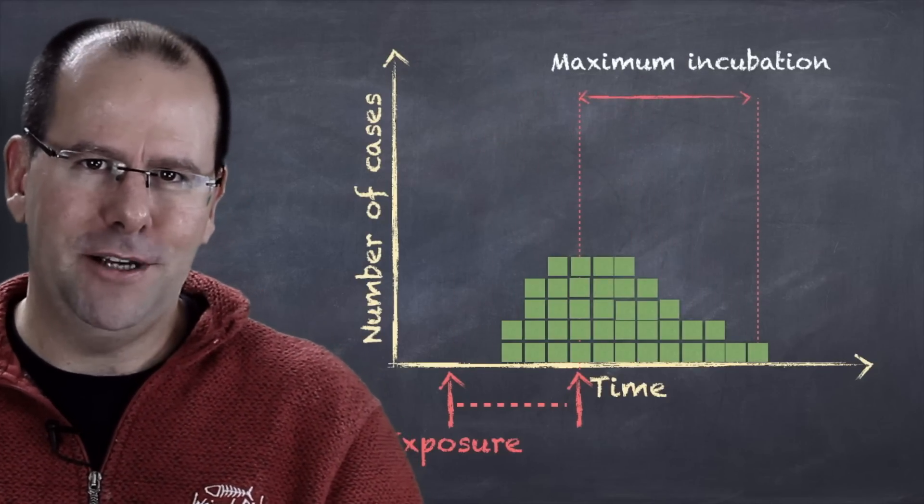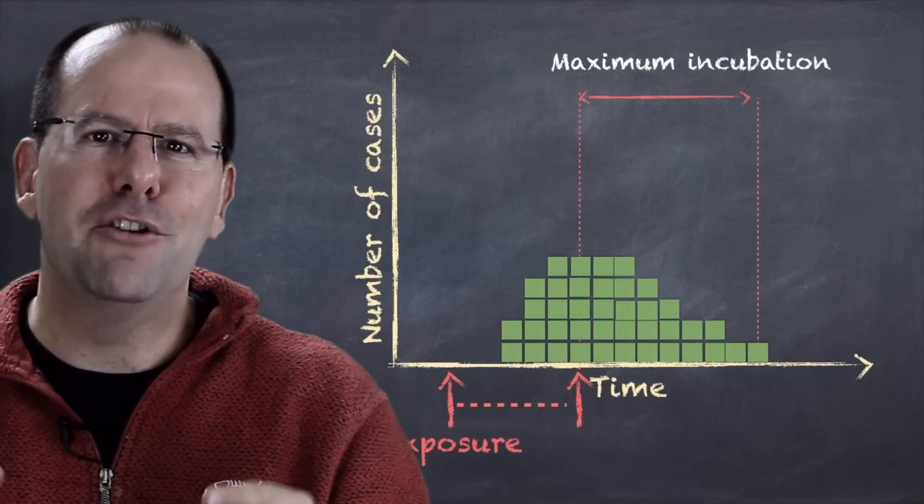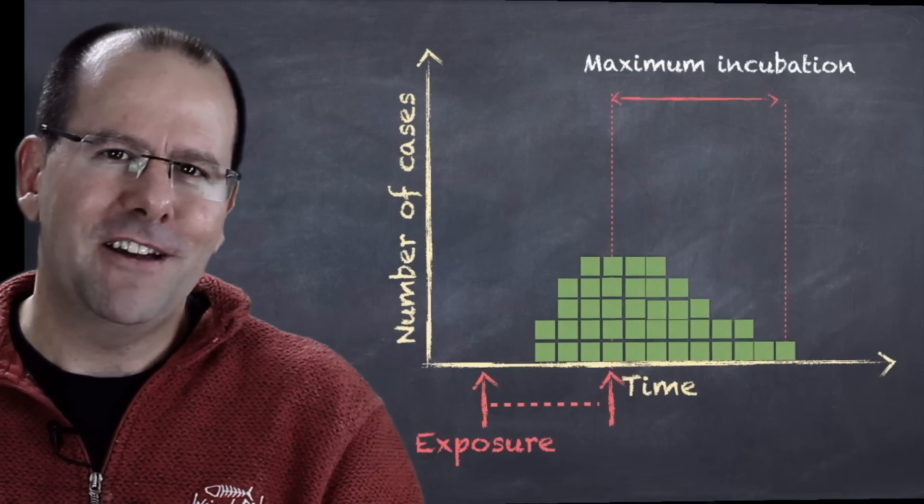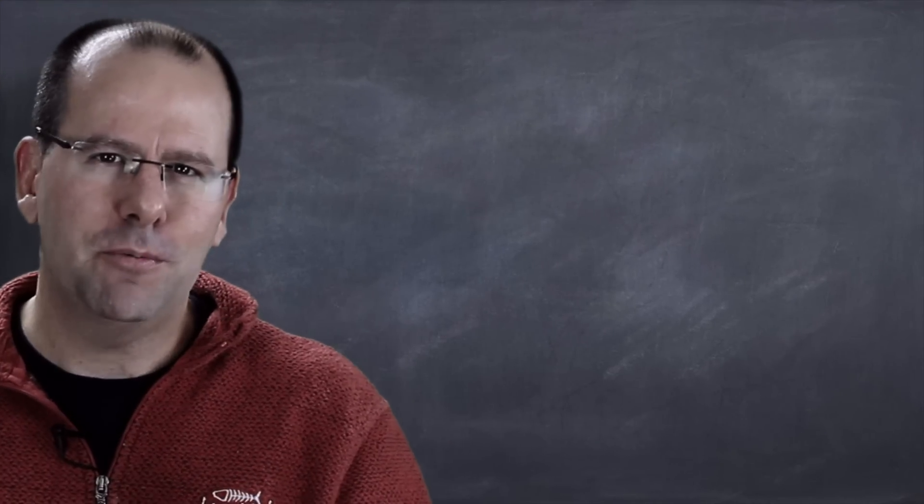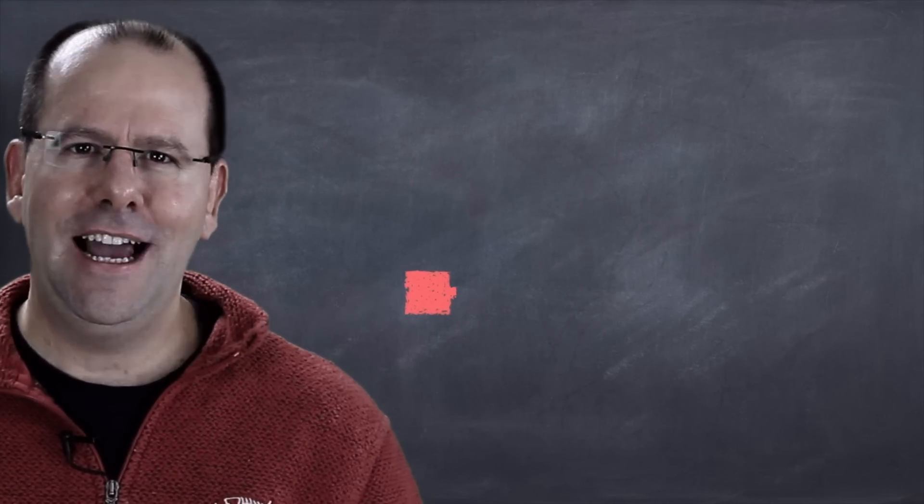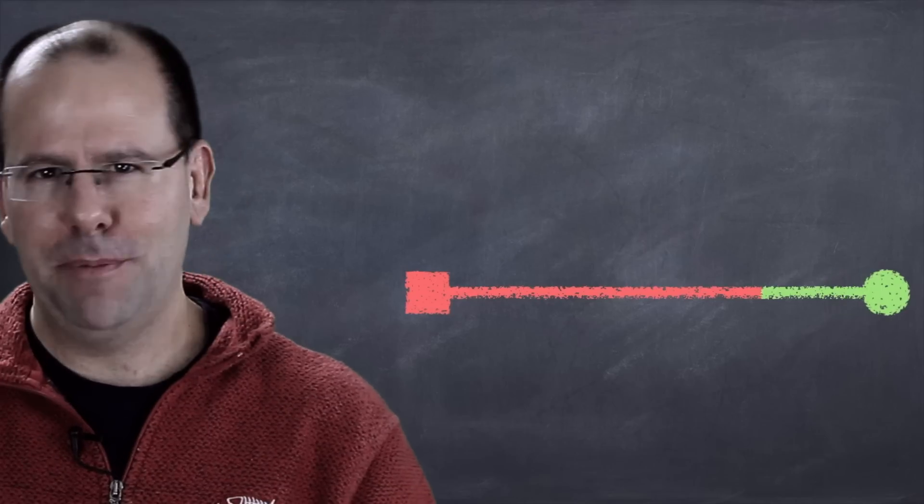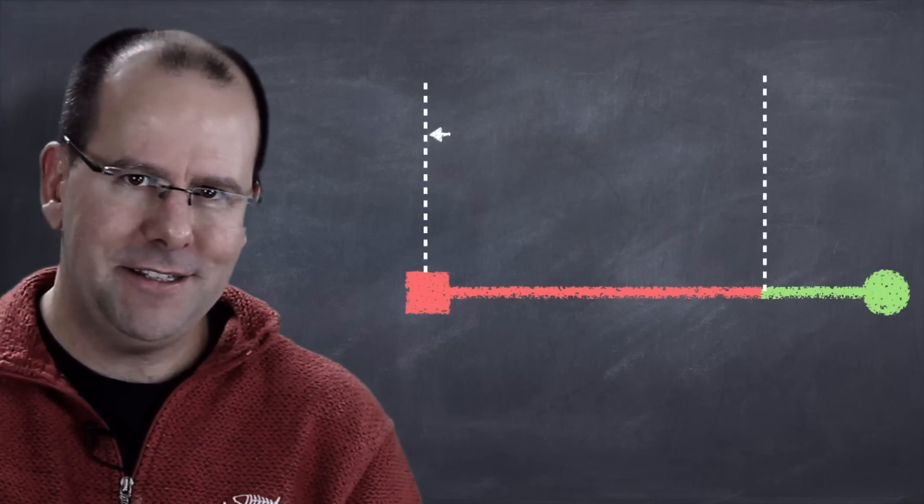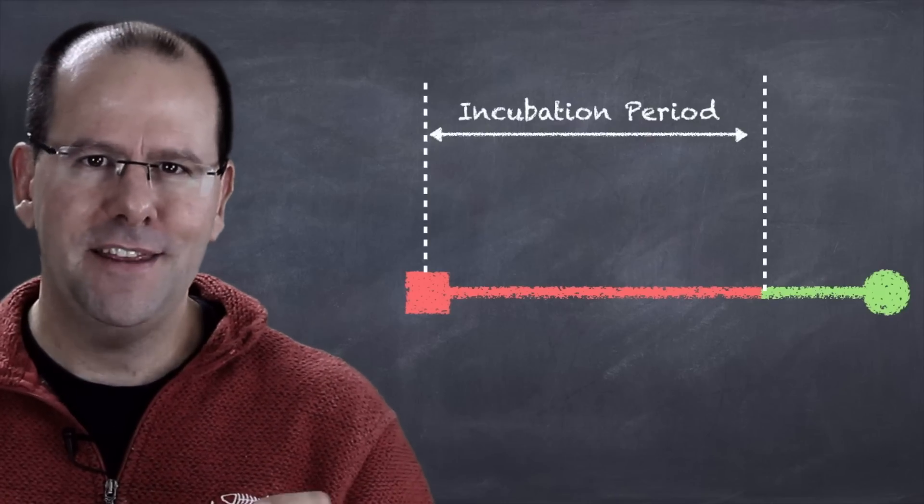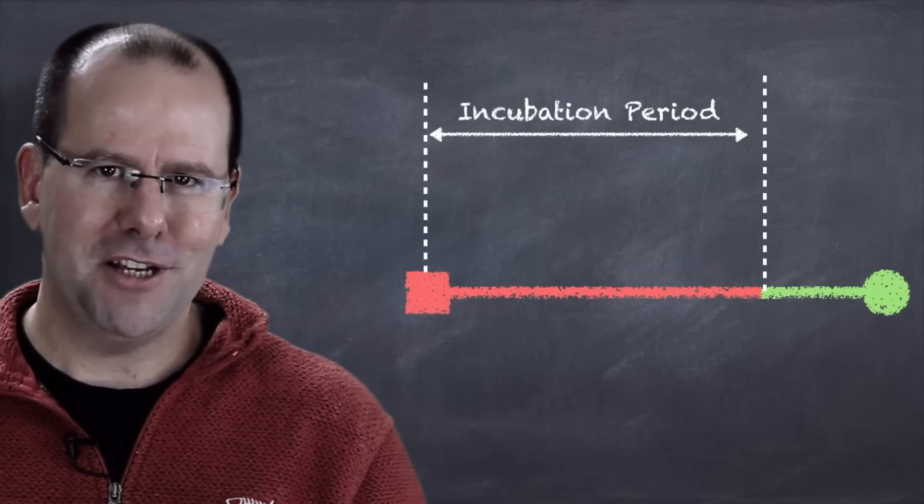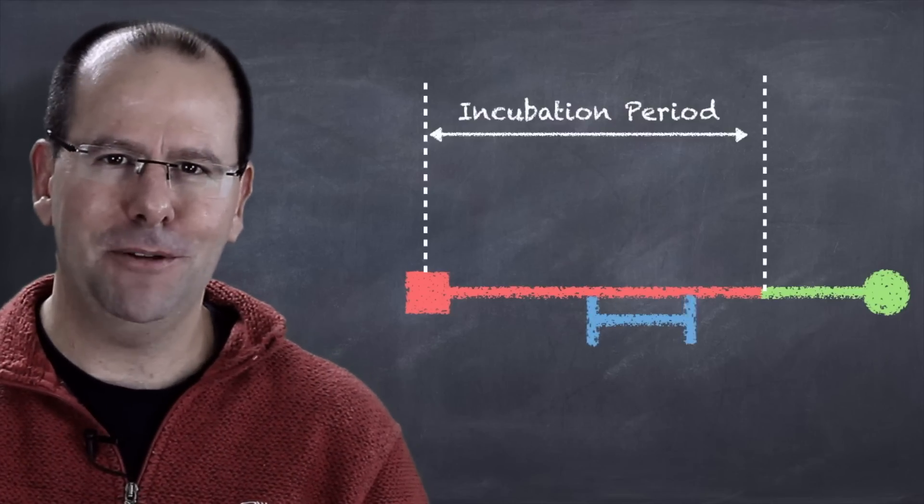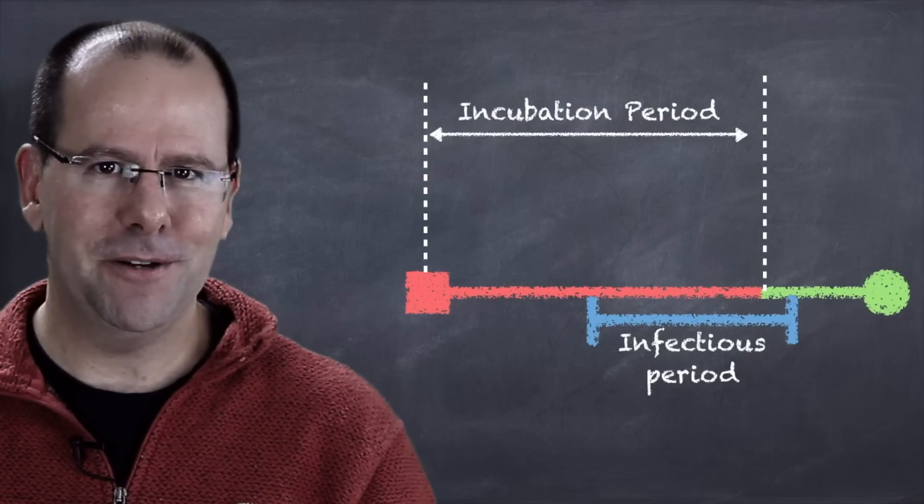Right, so those first two types of outbreaks are a function of environmental exposure, the point source and the common source. Now let's talk about what would happen if we have person-to-person spread, so what we call a propagated outbreak. Our index case gets infected and after a period of time he becomes symptomatic. We've already said that between the period of being infected and becoming symptomatic, we call that the incubation period. And there's a period of time during which that person is infectious, in other words they can pass it on to other people, and as you can guess that's called the infectious period.